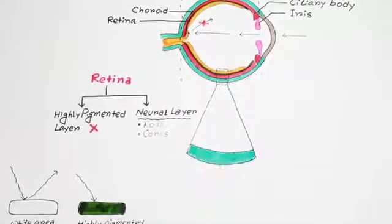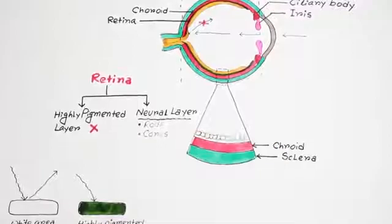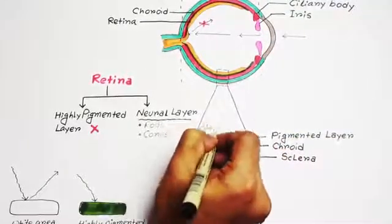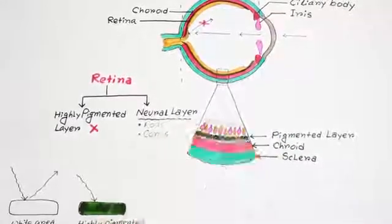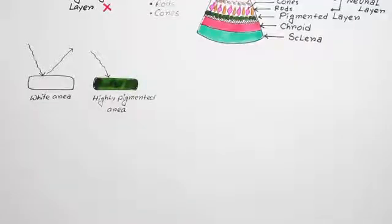Let's enlarge this area. Here, it is sclera, then choroid, and this pigmented layer. And just above the pigmented layer, there is neural layer which contains rods and cones and bipolar cells.